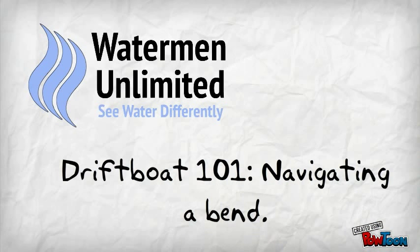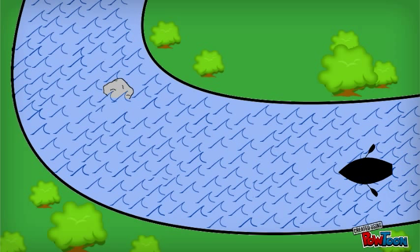So here is our example river and, of course, our drift boat. A few things to keep in mind. First, our water and our drift boat are both heading this way.